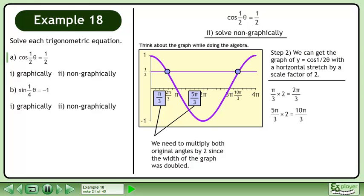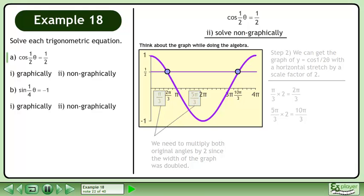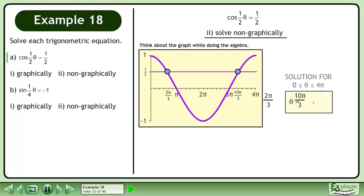Now multiply the second angle, 5pi over 3, by 2 to get 10pi over 3. The solution for the domain where theta is between 0 and 4pi is 2pi over 3 and 10pi over 3.